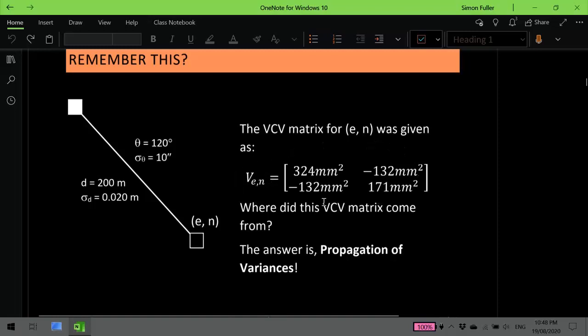But where did this matrix come from? How did we get this variance-covariance matrix for our eastings and northings from this information over here? The bearing distance and the precision of our bearing and distance. So that's what we're going to be covering. And once we know how to use propagation of variances, we'll be able to answer that question.